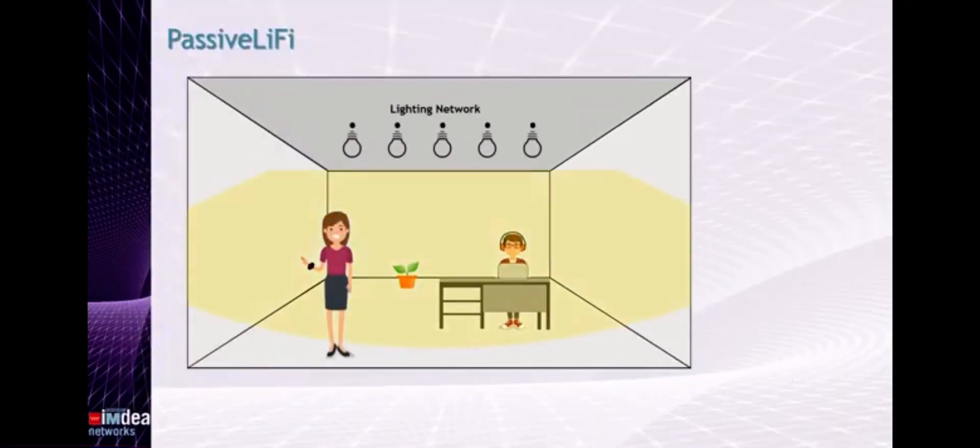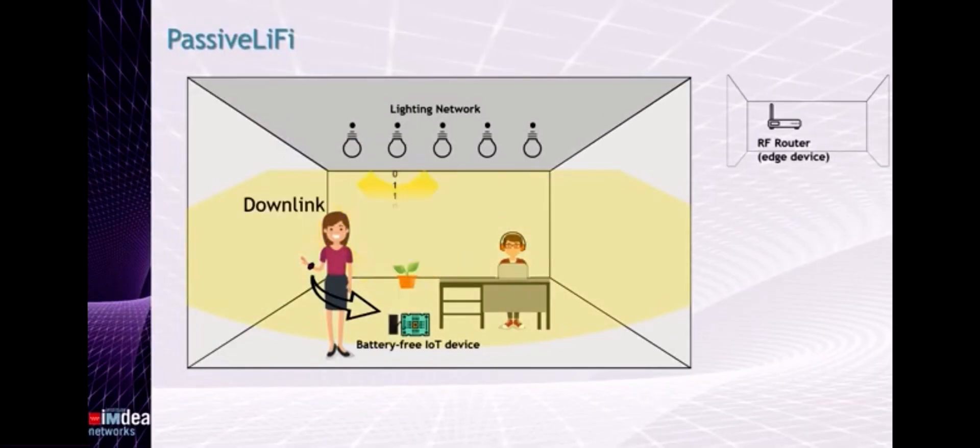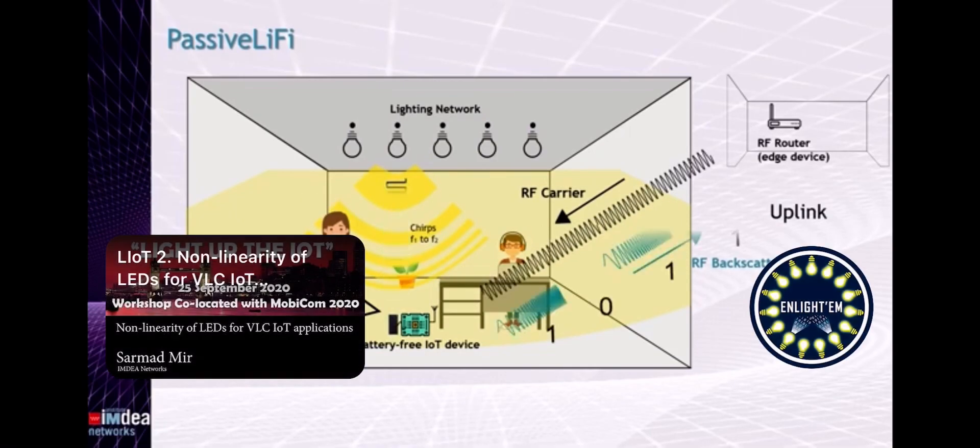We propose the use of Li-Fi as downlink and clock generator, an optimized solar cell-based receiver for simultaneous reception and harvest, and a chip-based backscatter uplink.